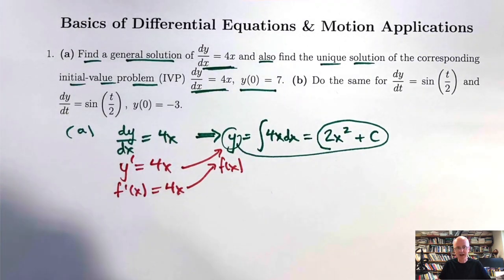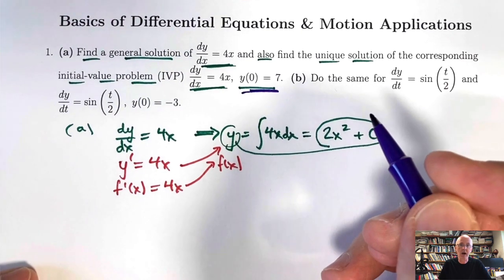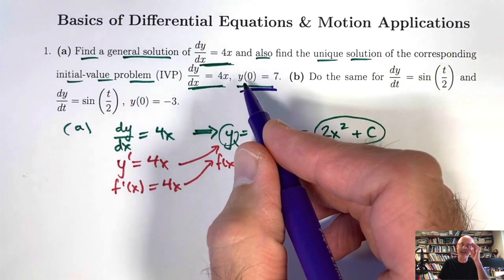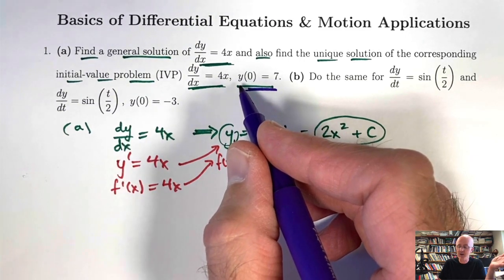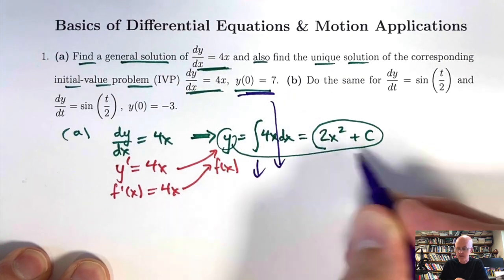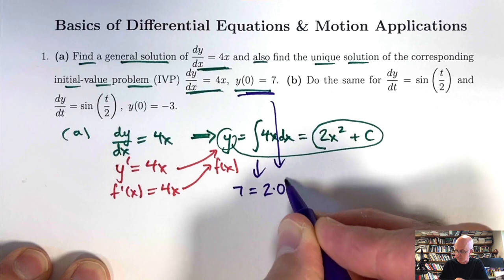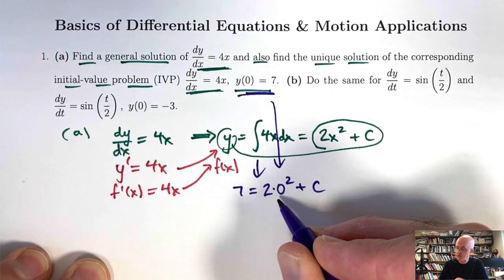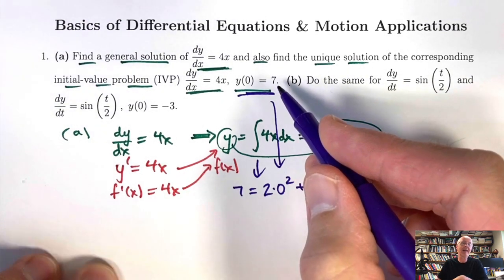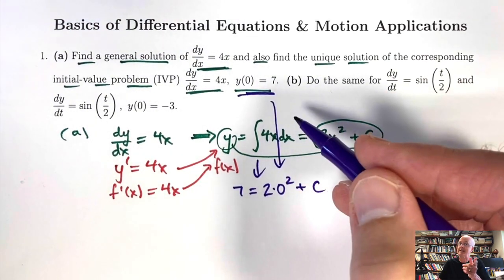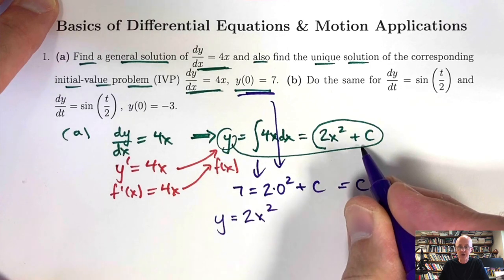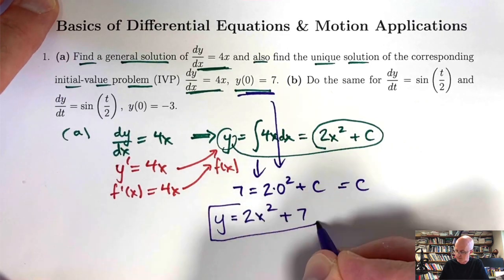Let's now also solve this initial value problem, where we add the initial condition y(0) = 7. y is representing both the dependent variable and the function name. It's saying when x is 0, you get an output of 7. So you need to replace y with 7 and x with 0 in the general solution to solve for c. 0 squared is 0, so c must be 7, the same as the initial value of y.